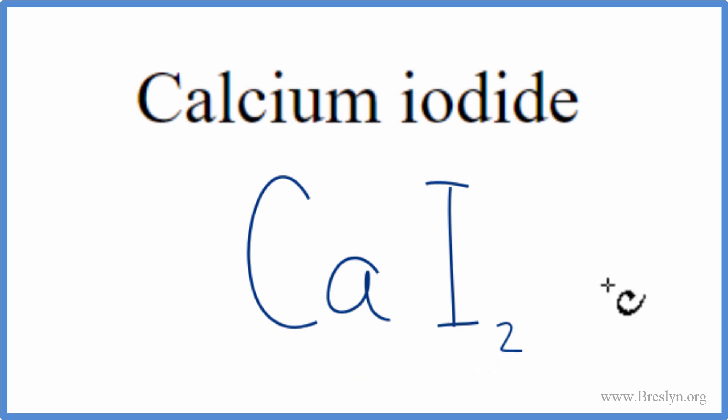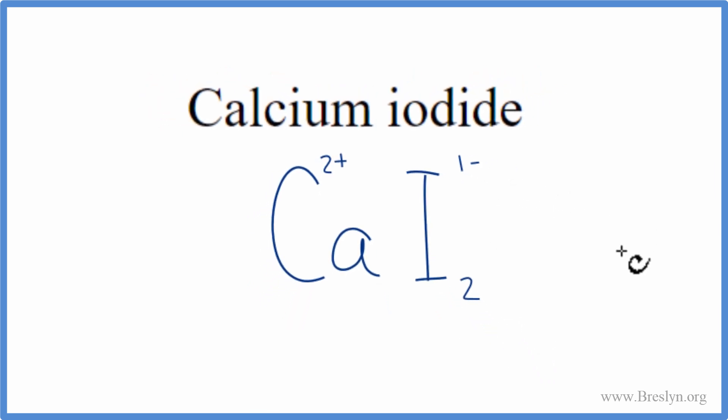But we should check our work. Remember that calcium, that was 2 plus, and the iodine, that was 1 minus. So we have two iodine atoms, so 2 times the 1 minus, that gives us a minus 2. And then for the calcium, we have the 1 times the 2 plus, that gives us a plus 2. Plus 2 and minus 2, those add up to zero, so the net charge on our compound is zero.